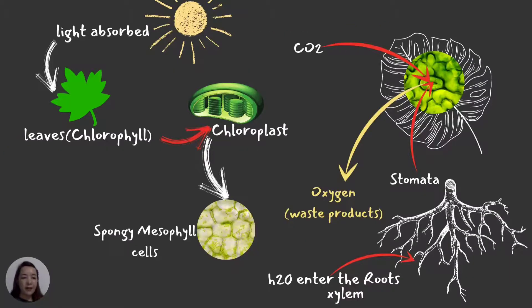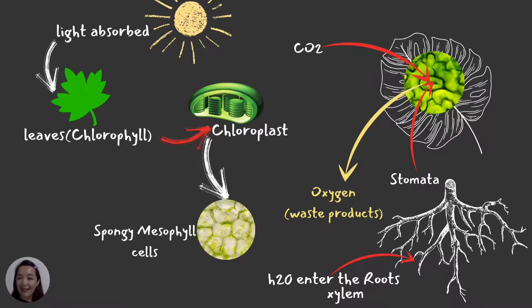As you can see, there is sunlight being absorbed by the leaves. The chlorophyll, which is found inside the chloroplasts, captures the light energy. The chloroplast is an organelle in the plant cell responsible for photosynthesis. Photosynthesis also happens in the spongy mesophyll cells. The stomata — like a window of the leaves — is where carbon dioxide from the air enters, diffuses through the stomata, and goes directly to the chloroplast.